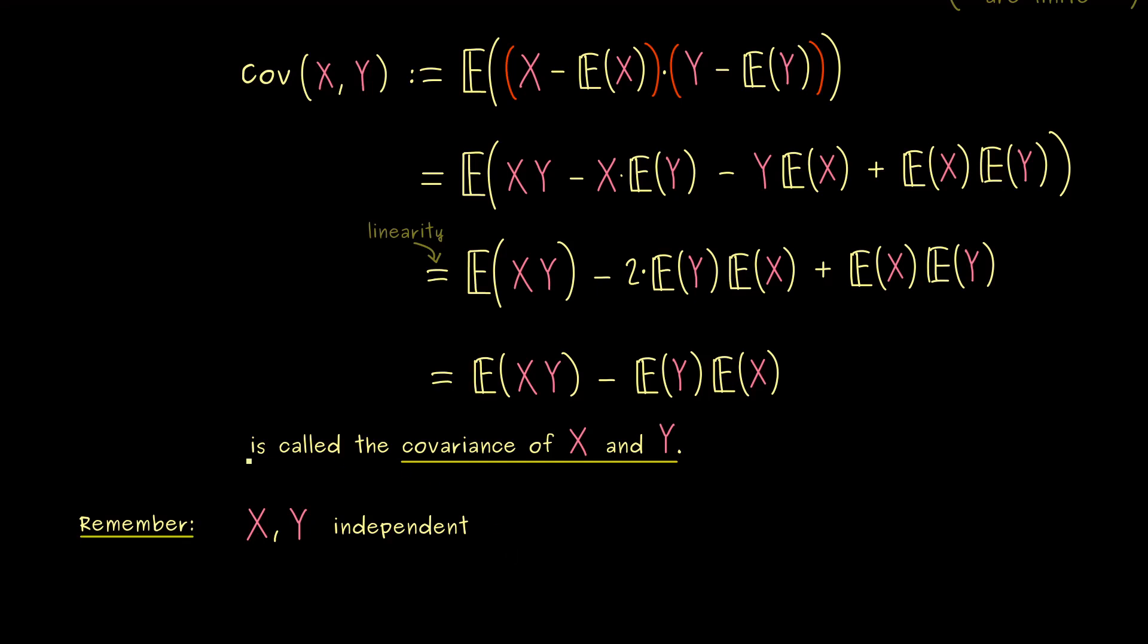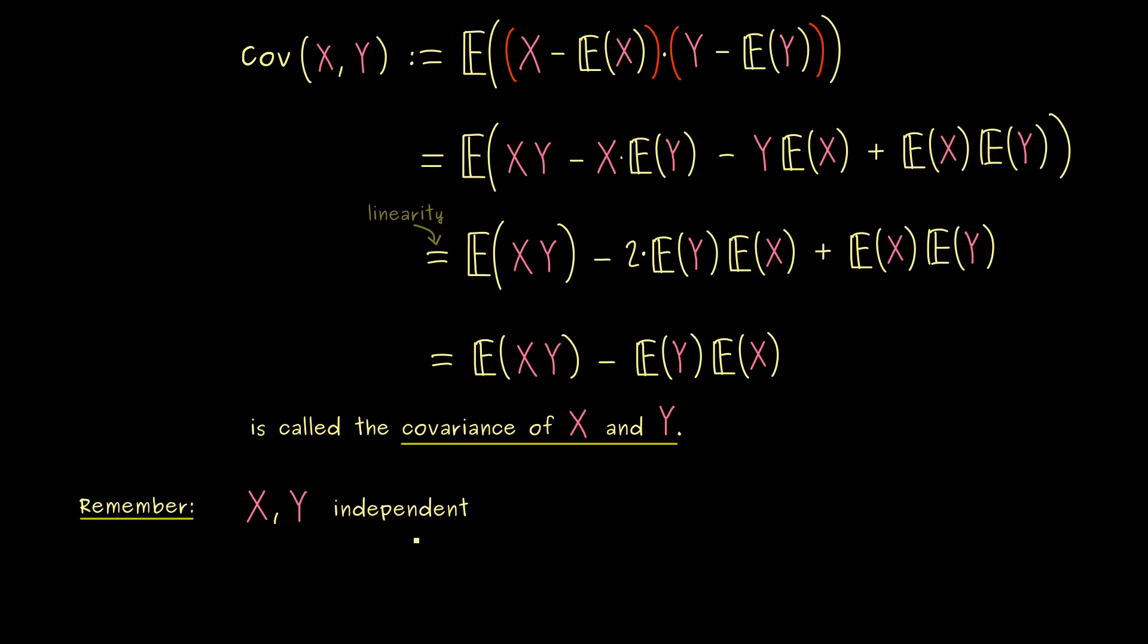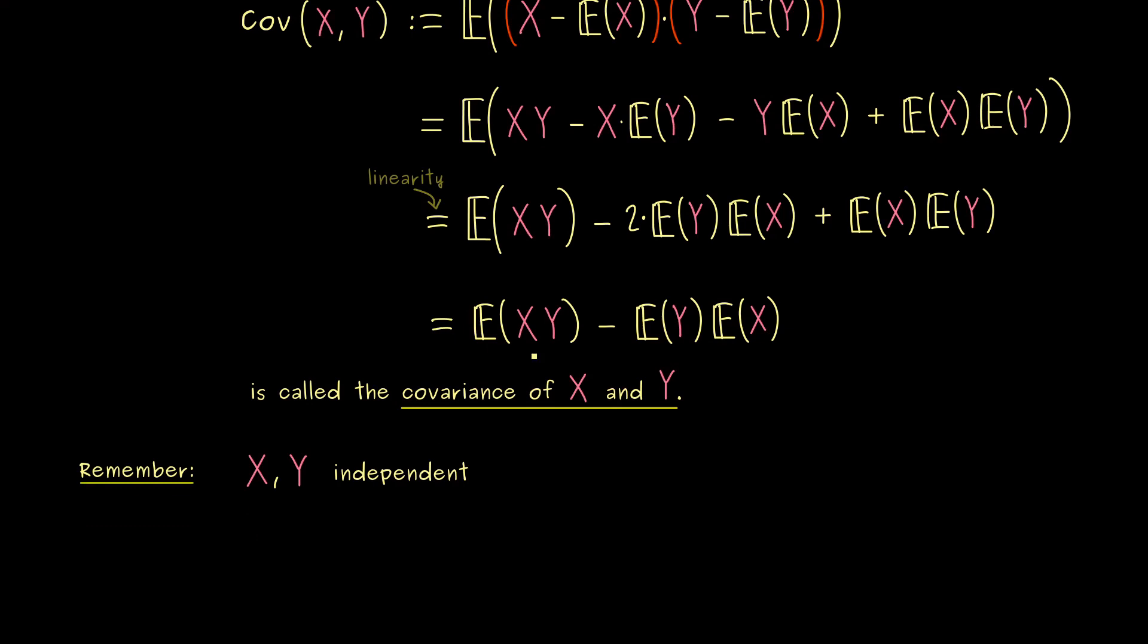In fact, if we assume that X and Y are independent, we know that this expectation is just the product of the two expectations. In other words, the covariance is zero in this case.